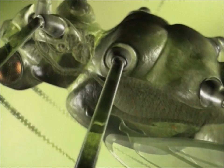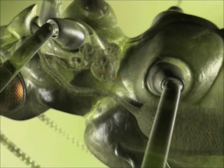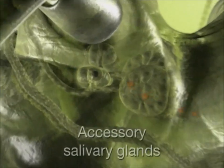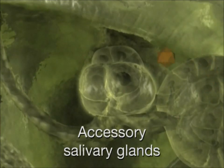On their way, they also reach the principal salivary glands, and the neighboring accessory salivary glands through which they enter.